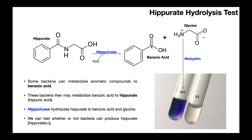Of these products — benzoic acid and glycine — glycine is really used in the test because we're going to incubate this with ninhydrin. This ninhydrin molecule can react with glycine, and when it does, it turns the media a bluish violet color.